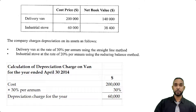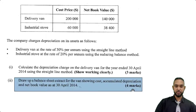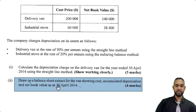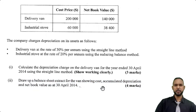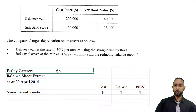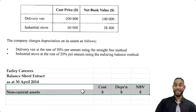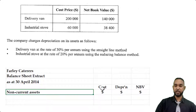Part two of the question asks us to draw up a balance sheet extract — a statement of financial position extract — for the van, showing the cost, accumulated depreciation, and net book value as at 30th April 2014. We head it up with the name of the entity, the name of the statement, and the period to which it applies. The headings for the columns are cost, accumulated depreciation, and net book value.